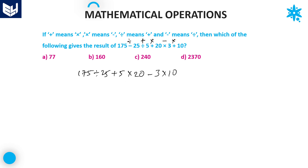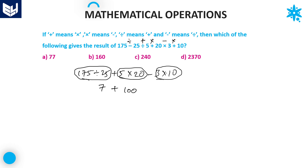First priority is always given for division: 175 divided by 25 equals 7. After that multiplication: 5 into 20 equals 100. Next multiplication: 3 into 10 equals 30. Then 100 minus 30 equals 70, and 70 plus 7 equals 77. Option A is the right answer.